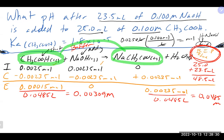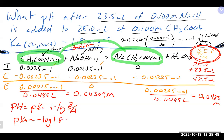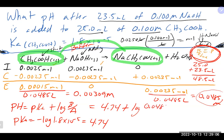Using Henderson-Hasselbalch: pH = pKa + log([base]/[acid]). pKa = −log(1.8 × 10⁻⁵) = 4.74. So pH = 4.74 + log(0.0485 / 0.00309). Calculating: log(0.0485 ÷ 0.00309) ≈ 1.196. pH ≈ 4.74 + 1.20 ≈ 5.94.